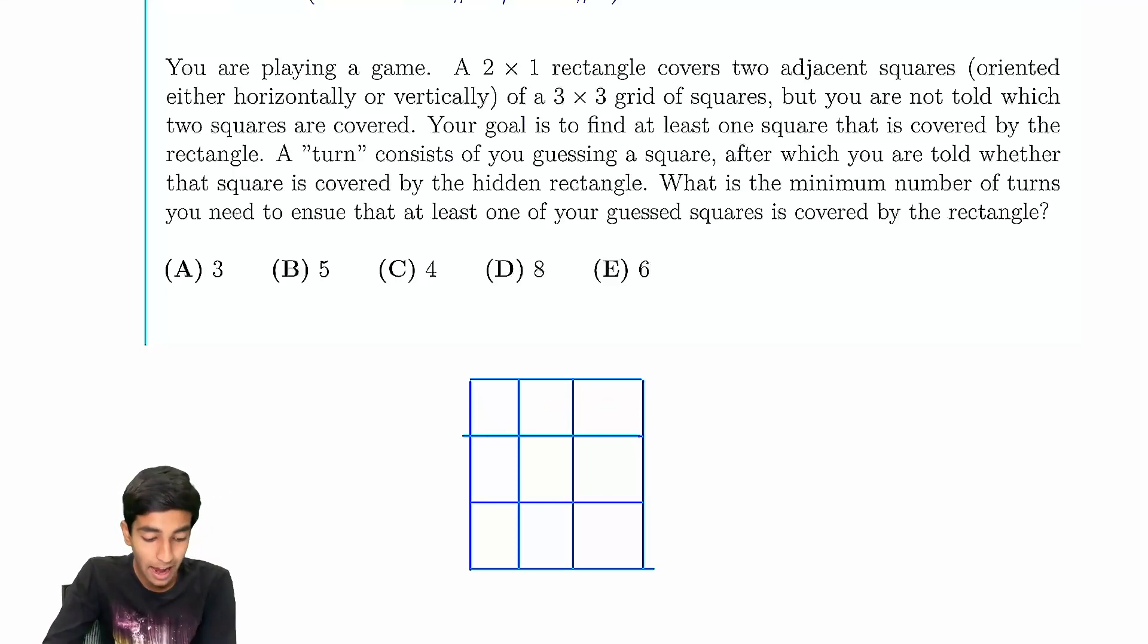Basically, we're trying to guess squares one after another. We're asked to find what's the minimum number of guesses we need, such that we're guaranteed to land on one of the squares of our 2x1 domino.